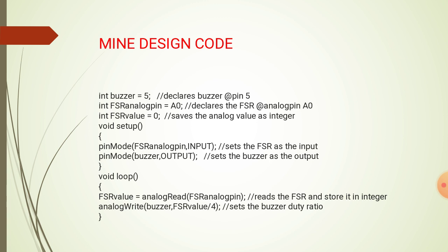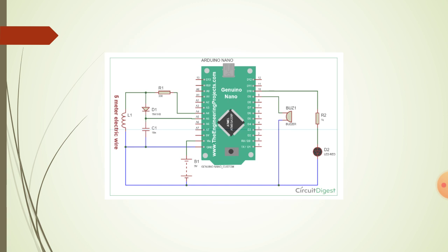The two portions void setup and void loop are there. It sets the FSR as output and sets the buzzer as output in the void setup portion. In the void loop portion, it reads the FSR and stores it in the integer and sets the buzzer duty ratio.